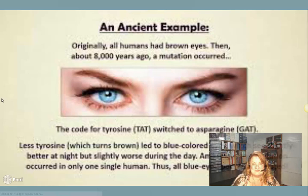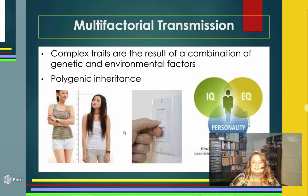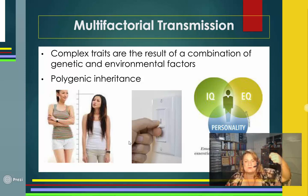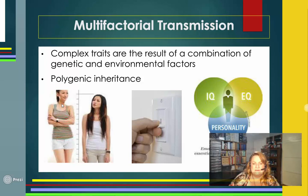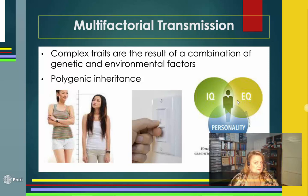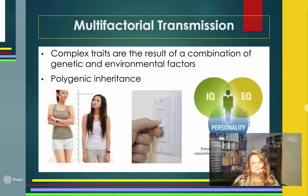Multifactorial transmission: think of some genes as a dimmer switch rather than a simple on/off. Intelligence, height, flexibility, being kind — there's more than one thing that goes into turning those genes on or off. You can have two sisters in the same house who are two different heights. IQ is our intelligence quotient and EQ is our emotional quotient — our emotional and psychosocial smarts. All these things have multifactorial transmission. Polygenic inheritance means many-gene inheritance.